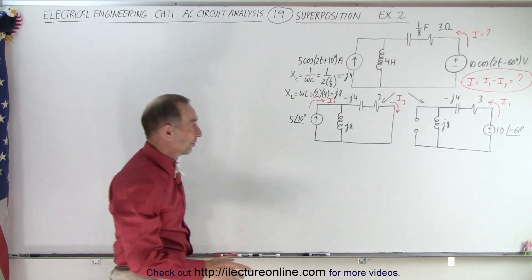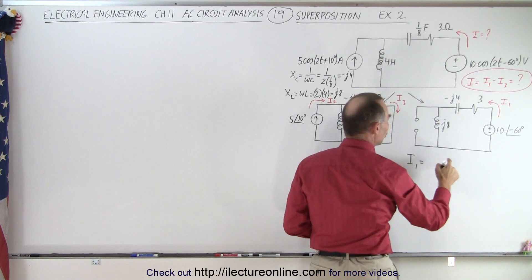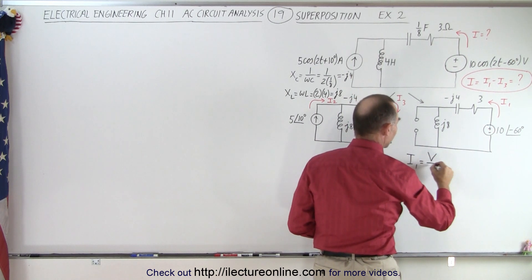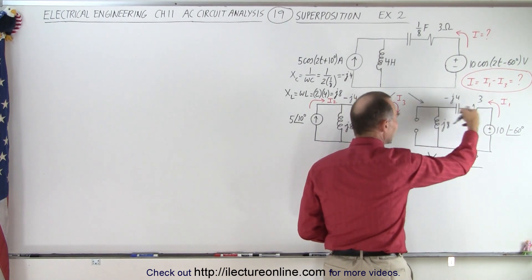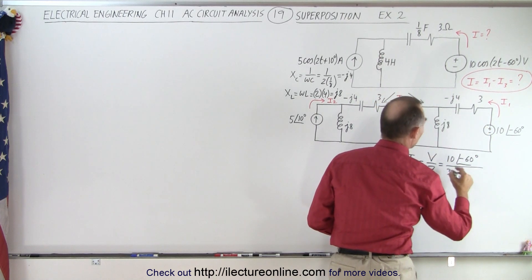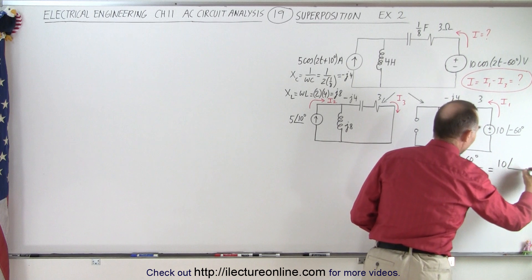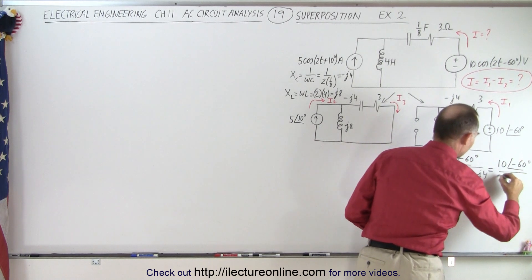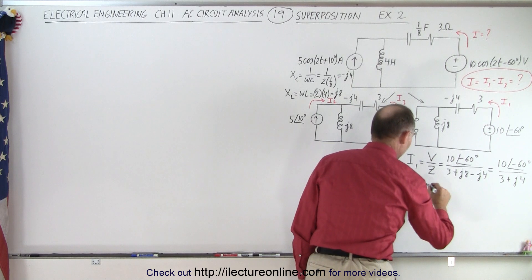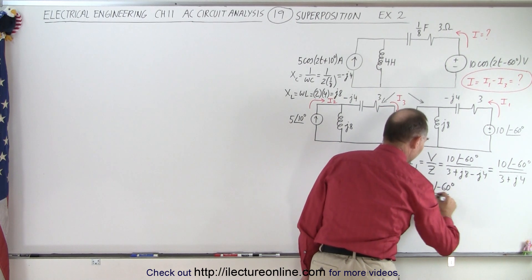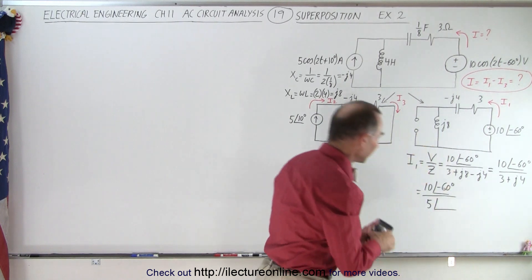Let's do the easy circuit first. Here we have a voltage source and a series circuit, which means that I1 is equal to the voltage divided by the impedance. The voltage is 10 with a phase angle of minus 60 degrees, and the impedance is simply the sum of all the impedances: 3 plus J8 minus J4, which equals 10∠-60° divided by 3 plus J4. In order to divide we have to change to magnitude and phase angle, so 10∠-60° in the denominator, that's 3, 4, 5, so we have 5 with a phase angle of 53.13°.